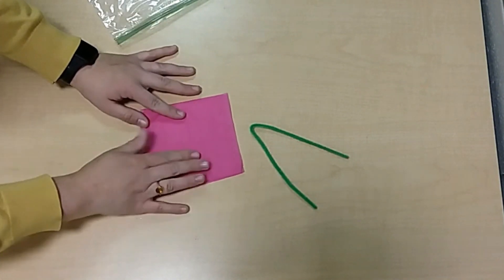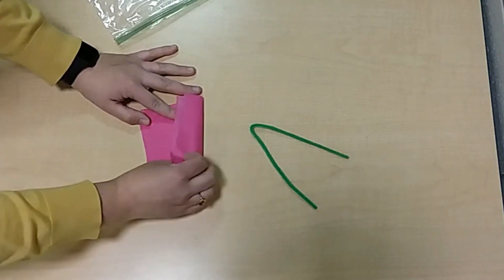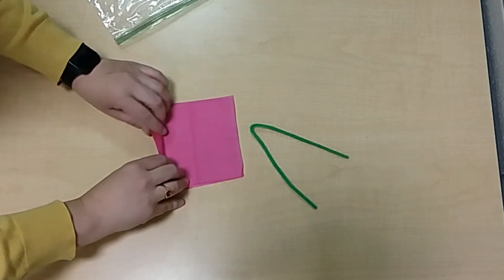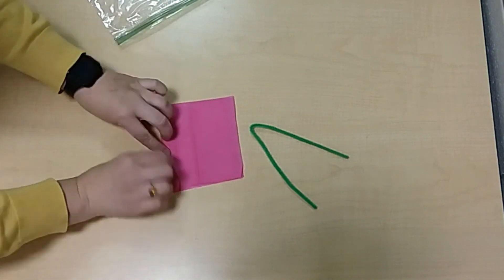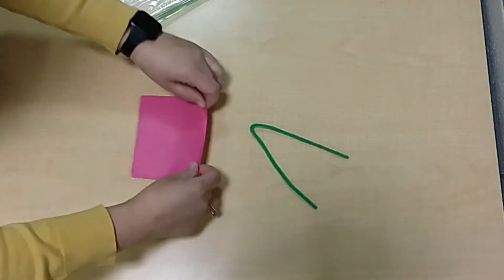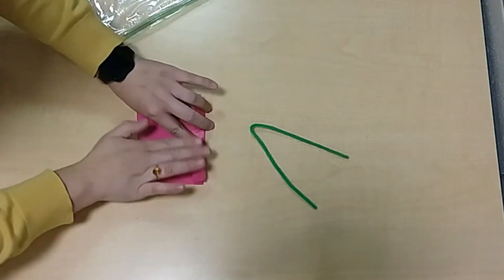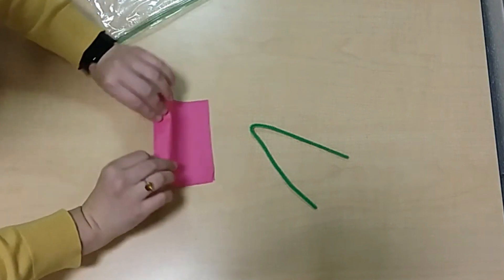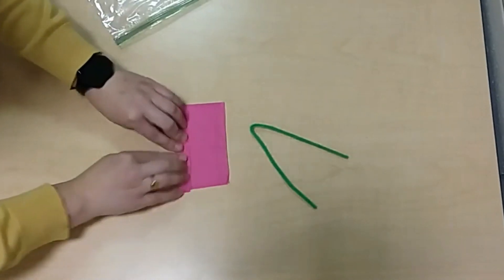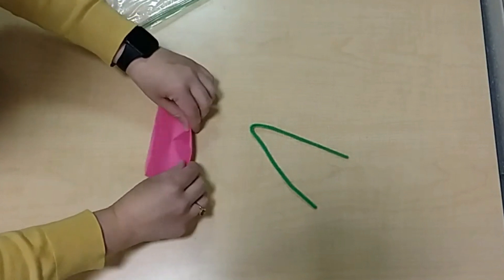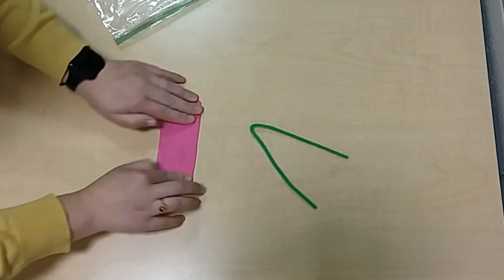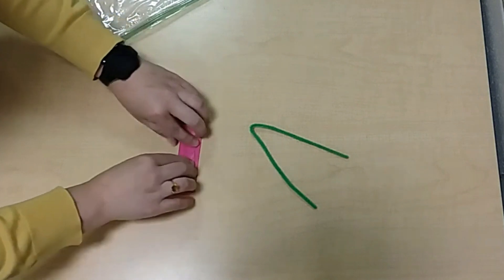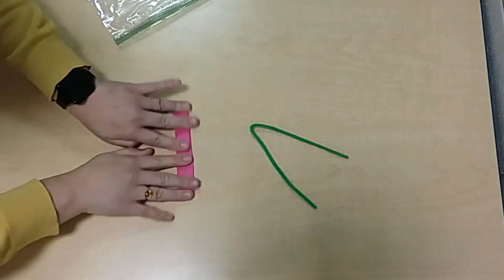So what you're going to do is you're going to take these stacks of tissue paper and you're going to start with an accordion fold at the bottom. So you're going to fold it up and then you're going to flip it over, fold it again, flip it over, fold, flip it over, and fold.